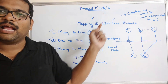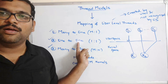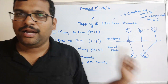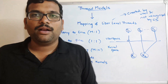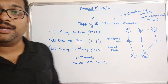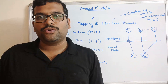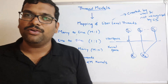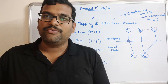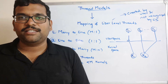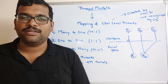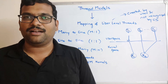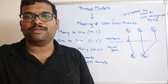This process of mapping is called a model. We have three models: many-to-one, one-to-one, and many-to-many. Hope you understood this concept. If you have any doubts, feel free to post them in the comment section and I will try to clarify them. If you enjoyed the session, please like and share it with your friends, and don't forget to subscribe to our channel. Thanks for watching!